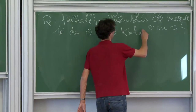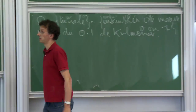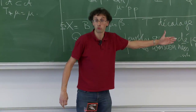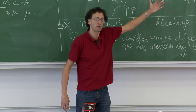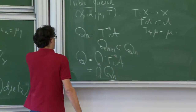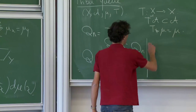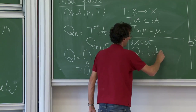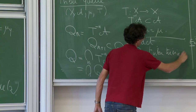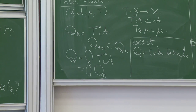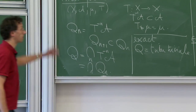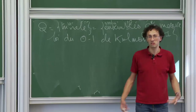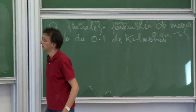En théorie des probabilités, c'est la loi du 0-1 de Kolmogorov : si on a un événement qui ne dépend que de ce qui se passe après le temps n, et que c'est vrai pour tout n, alors cet événement a mesure 0 ou 1. En termes de dynamique, on dit qu'un système dynamique est exact quand la tribu queue est la tribu triviale. Et la loi du 0-1 de Kolmogorov en théorie ergodique dit que les décalages de Bernoulli sont des systèmes dynamiques exacts.